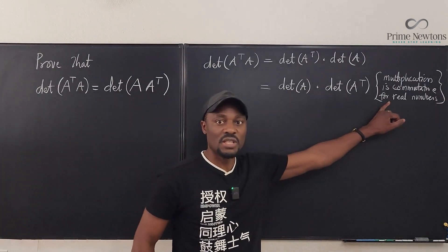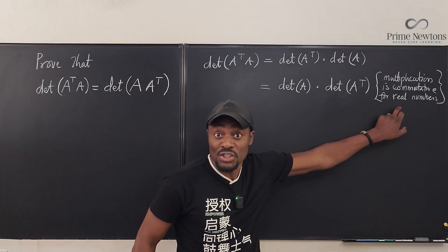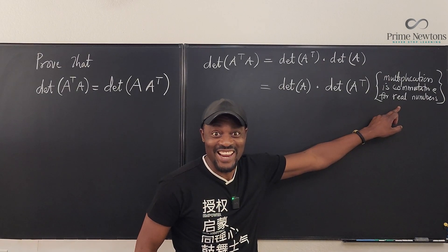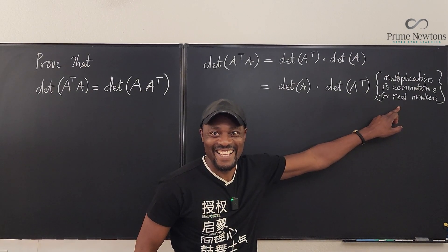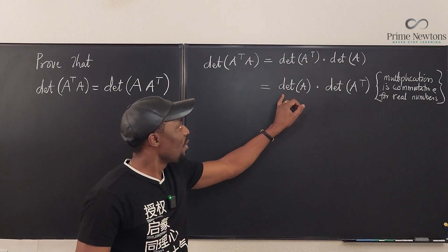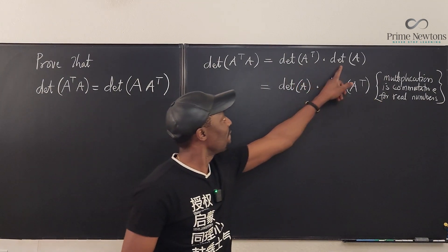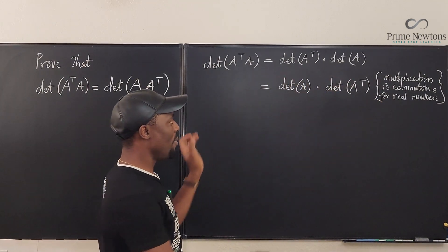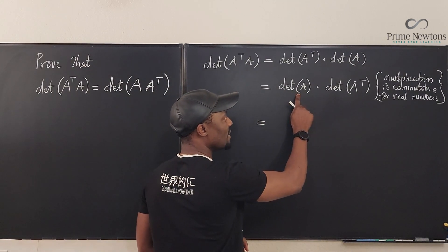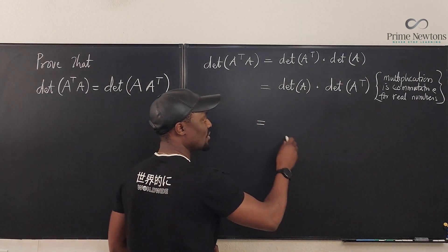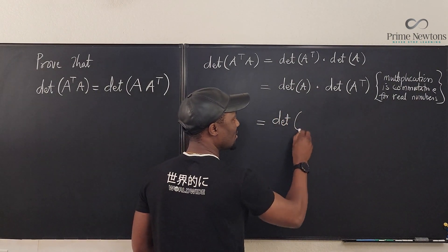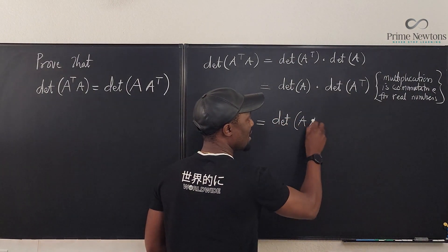That is the justification, and that's all you need to say. Once you have shown this, go back and re-merge them: the determinant of A times the determinant of A transpose is the same thing as the determinant of A times A transpose.